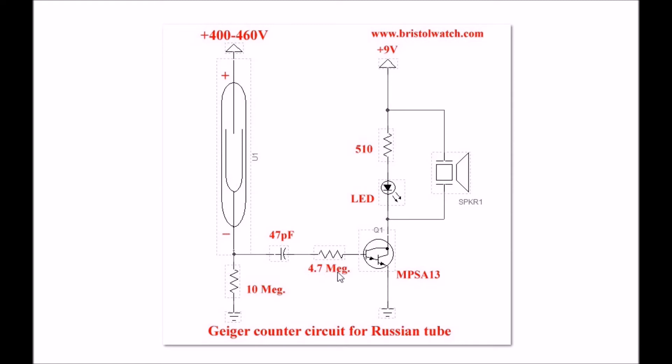A 4.7 meg resistor between the capacitor and the MPSA13 Darlington transistor, here is your LED and its resistor, and here is the piezo speaker or piezo buzzer. This circuit operates at 9 volts.